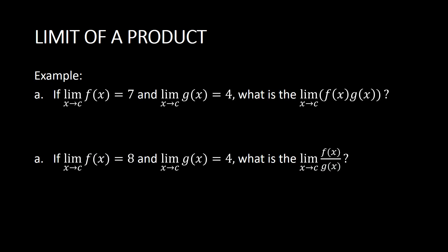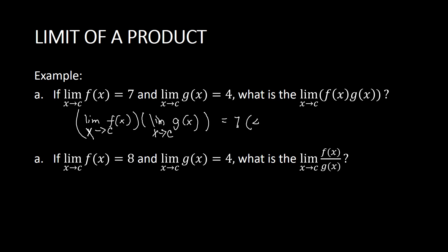For an example of the product: if the limit of f(x) as x approaches c is 7 and the limit of g(x) as x approaches c is 4, what is the limit of f(x) times g(x) as x approaches c? We break it into limits: the limit of f(x) as x approaches c times the limit of g(x) as x approaches c. The limit of f(x) is 7 and the limit of g(x) is 4, so multiplying the results gives 28. The limit of the product of f(x) and g(x) is 28.